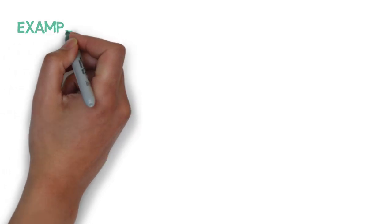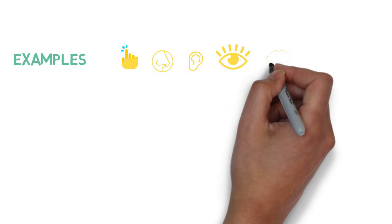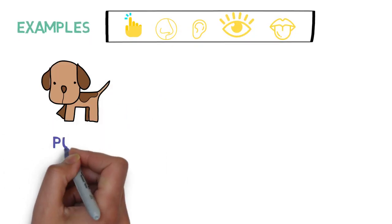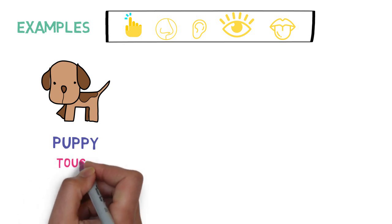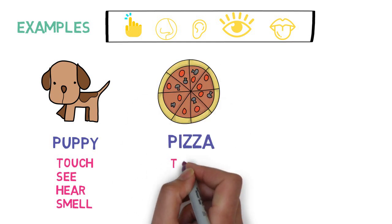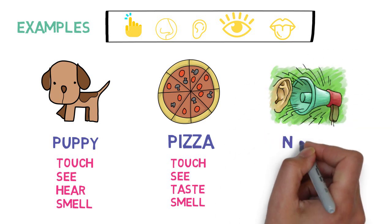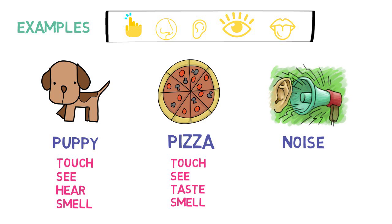Let's see examples to make things clear. Compare the examples with any of our five senses: touch, smell, hear, see, and taste. Everyone likes a puppy, right? You can touch, see, hear its barking, and smell its odor. So puppy is a concrete noun. You can touch, see, taste, and smell a pizza. And no one wants to hear a noise — here you are using your ears as a sense. So a puppy, a pizza, and noise all three come in the category of concrete nouns.